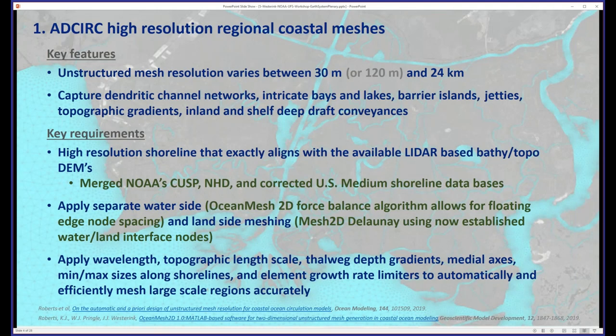The resolution varies between 30 and 120 meters, depending on which version of these models we're building, out to about 24 kilometers. We really focus on capturing this whole dendritic network of channels, intricate coastal bays, barrier islands, jetties, topographic gradients, and deep draft channels — all that stuff that makes the coastal zone breathe in and out ocean water as well as hydrology. A big piece of this effort was getting a very accurate coastline that aligned with the best DEMs available, combining NHD and U.S. medium shoreline into one continuous, highly resolved database of U.S. coastlines.